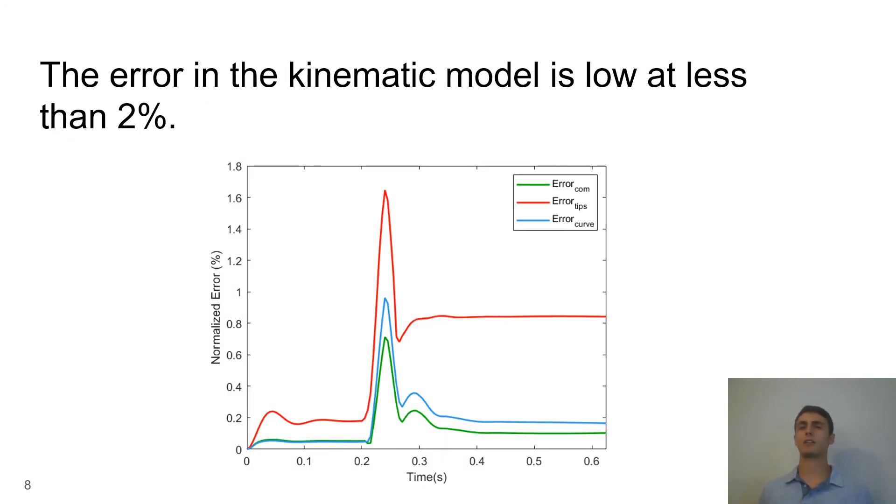This plot shows the error in the location of certain features of the robot normalized by the height of the robot. As you can see around 0.24 seconds the error spikes for all turns. This is when the robot actuates.